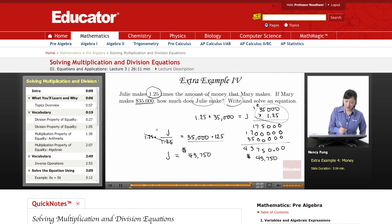So we've written the equation, j divided by 1.25 equals $35,000, Mary's amount. And we've solved the equation. Julie makes $43,750. Thank you for watching Educator.com.